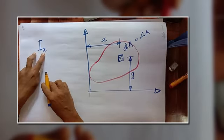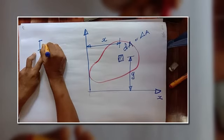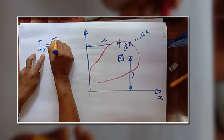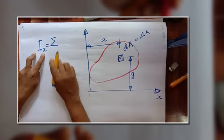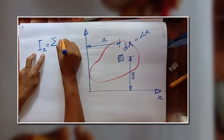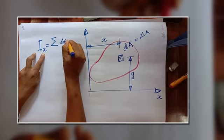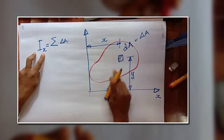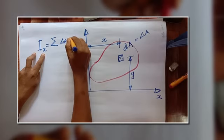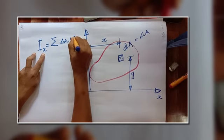I am going to write it with respect to x-axis, so Ix is equal to the sum of area, delta a, into the distance from x-axis, that is y, y square.